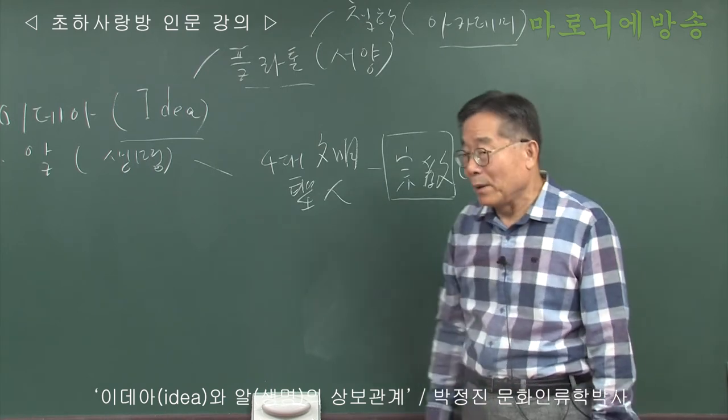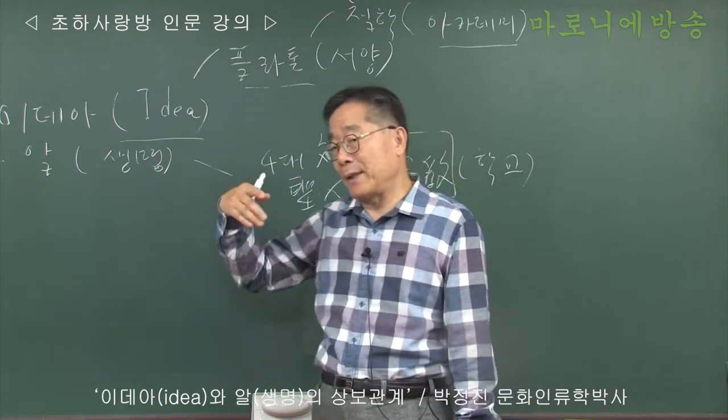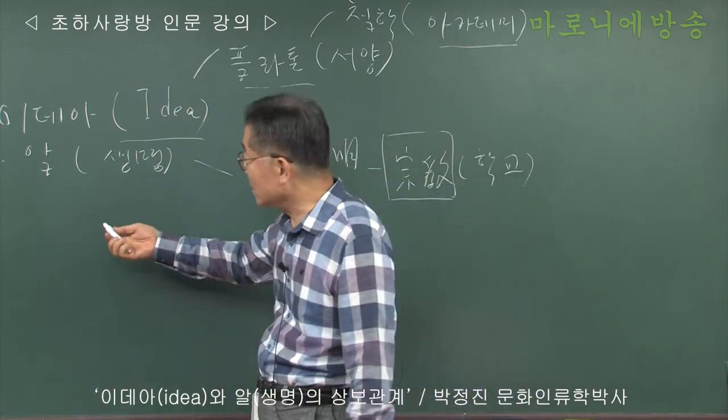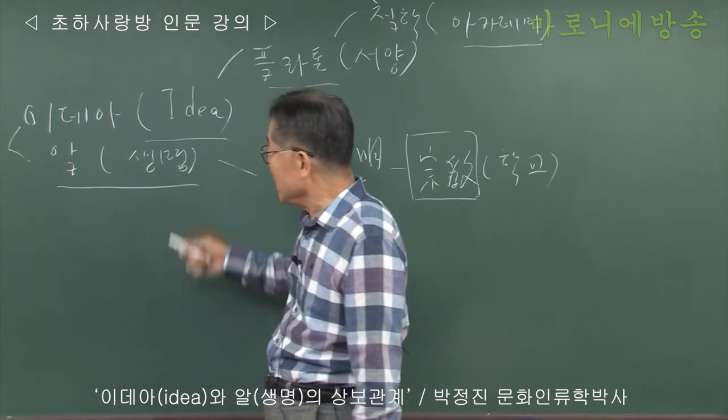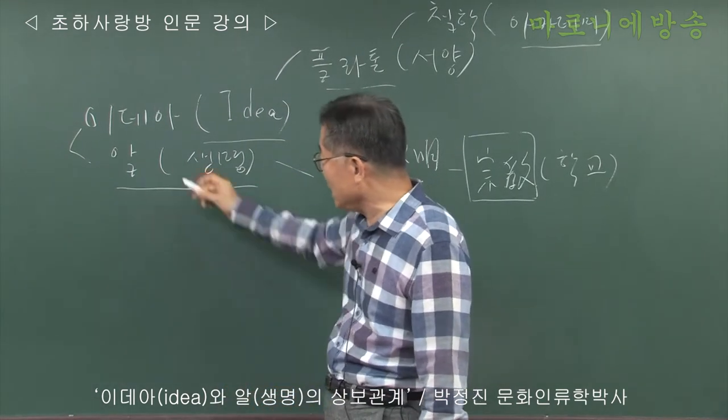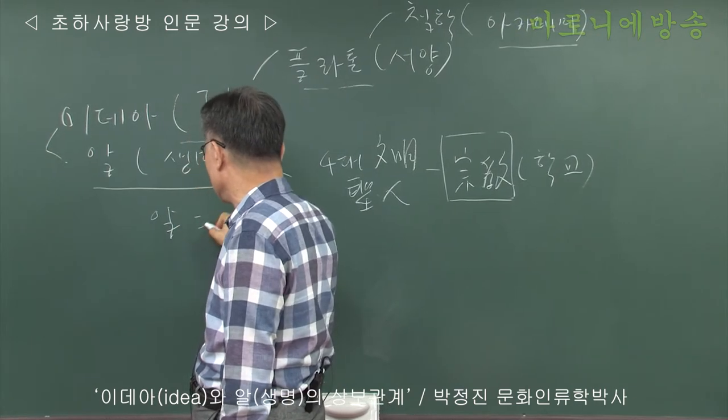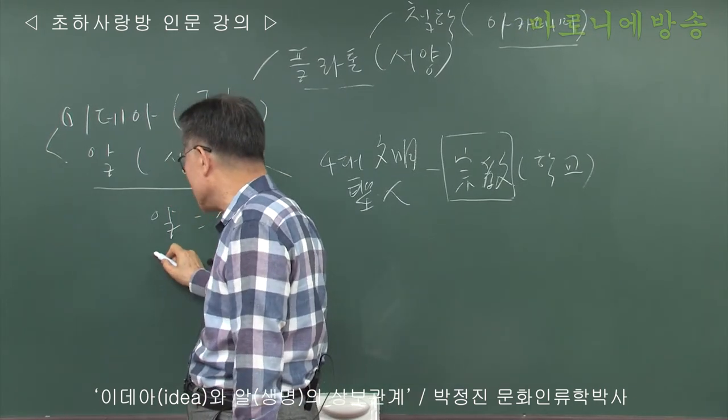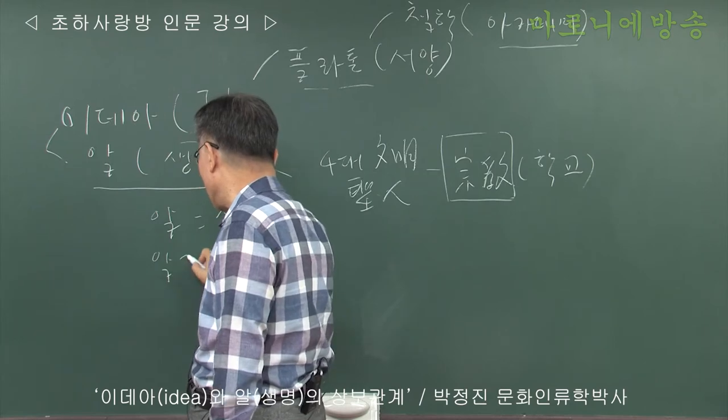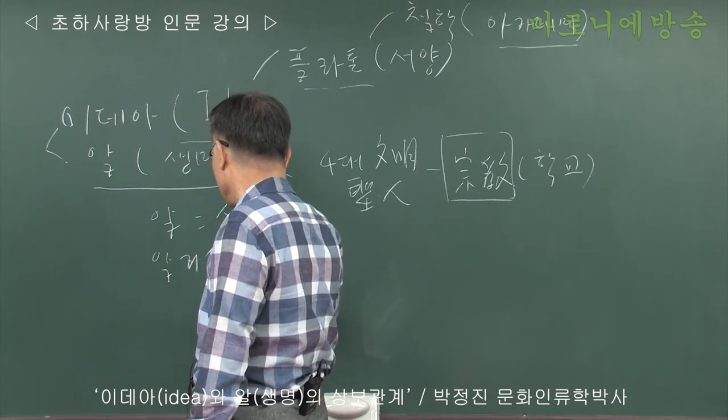그래서 서양에 이데아가 있다면 아시아, 동양에서는 알이 있다 이렇게 보는데 재미있는 게 알이라는 게 이게 그 생명을 나타내기도 하지만 이게 신을 나타내기도 합니다. 흔히 뭐 알라신, 알라신이라 하죠. 알라신도 여기 신이죠.